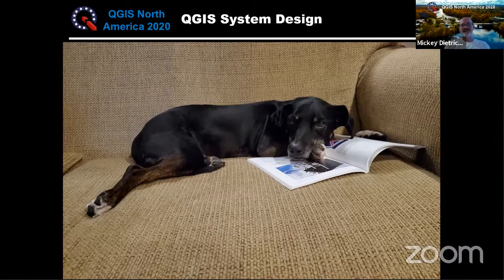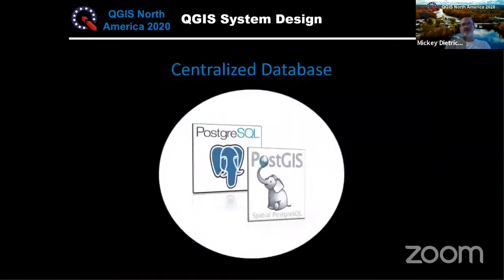Then came the QGIS system design — the tireless process of designing the system and doing a lot of research. We wanted it to handle emergencies like COVID-19 and be flexible enough to duplicate in another setting. We decided on a centralized database using PostgreSQL hosted on Amazon Web Services, with PostGIS as the GIS component added to the PostgreSQL database. The goal was to have all data in one spot feeding QGIS, our online map viewer, and our mobile data collection.